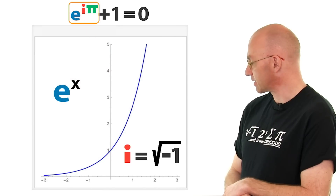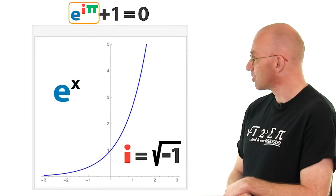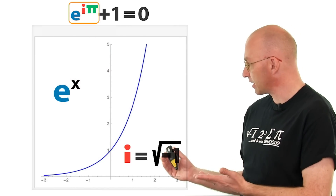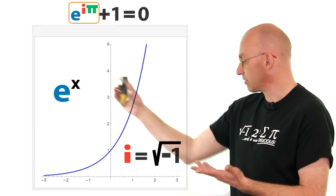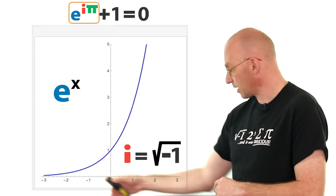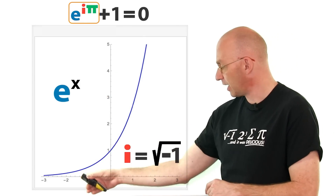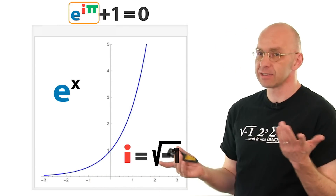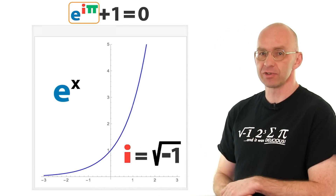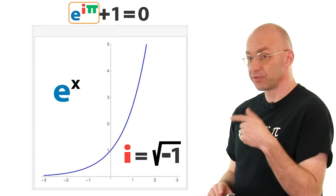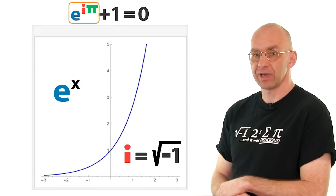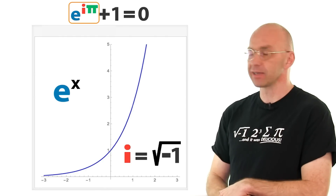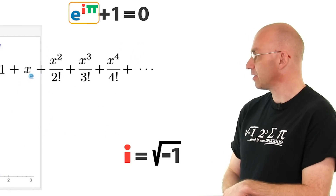So how are we ever going to evaluate e to the i? I mean, i is not on the real number axis, so we can't just go there graphically. The Simpsons are not very helpful in this respect. For doing that, we actually have to look at one of the absolute gems of calculus.